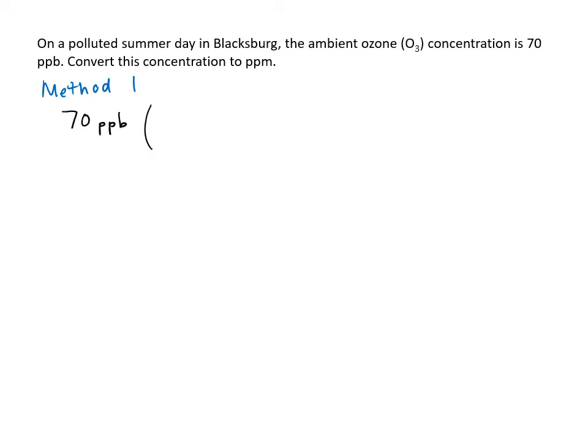And so I need to go to ppm. I need to cancel out, get the parts per billion to cancel out, so that goes in the denominator. And I know there's a factor of a thousand here. It goes in the denominator, since we have 1,000 parts per billion per 1 ppm, and that gives me 0.070 ppm.